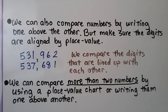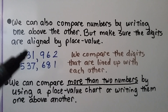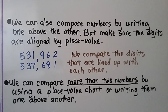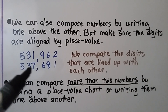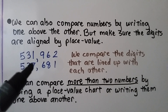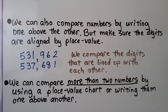We can also compare numbers by writing one above the other, but make sure that the digits are aligned by place value. We compare the digits that are lined up with each other. They both have a five and a three, but in the one thousands place this has a one and that has a seven, so the second number is greater.